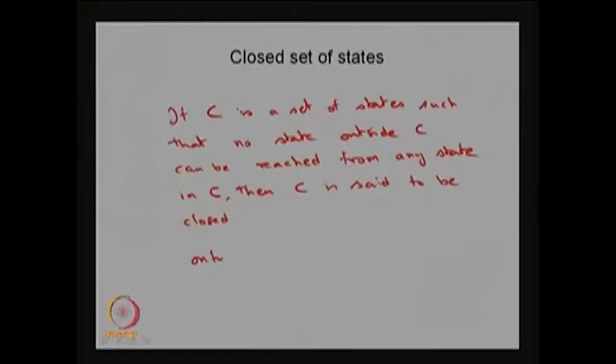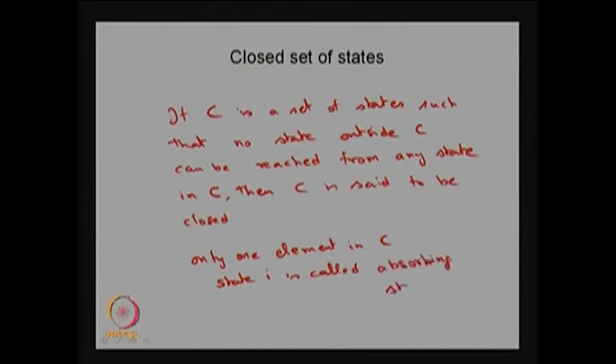There is a possibility a set can have more than one element — more than one state in the collection. The class may have only one element or it may have more than one elements. If any closed communicating class has only one element, meaning you cannot include one more state to make it a closed or communicating class, then that state is called an absorbing state.